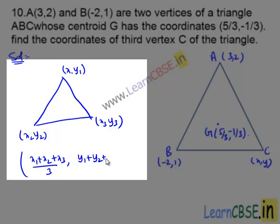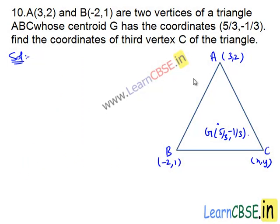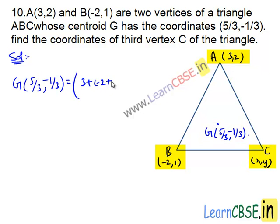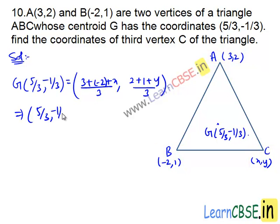y1 plus y2 plus y3 divided by 3. The centroid G equals 5 divided by 3, minus 1 divided by 3, which equals x1 plus x2 plus x3 divided by 3, that is 3 plus minus 2 plus x divided by 3, comma 3 plus y divided by 3. This implies 5 divided by 3, minus 1 divided by 3 equals 1 plus x divided by 3, comma 3 plus y divided by 3.